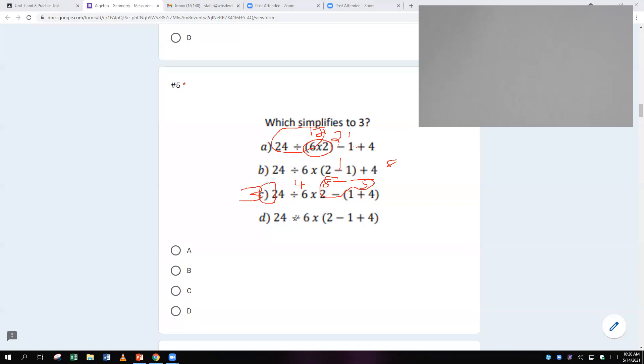And just to double check, 24 divided by 6 is 4. 4 times, well, 2 minus 1 is 1 plus 4 is 5. So I'm sorry, I should have done this first. It doesn't change it. But 2 minus 1 is 1 plus 4 is 5. So that turns into 5 there. And then 24 divided by 6 is 4. And 4 times 5 is 20. So that one doesn't work either. So the correct answer is C.